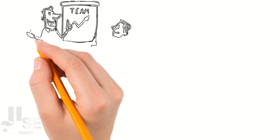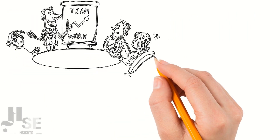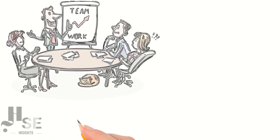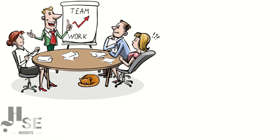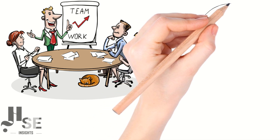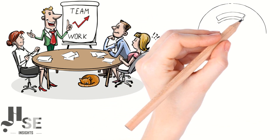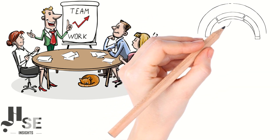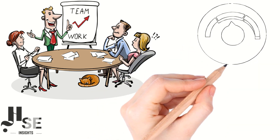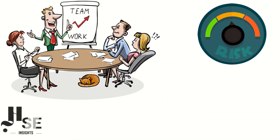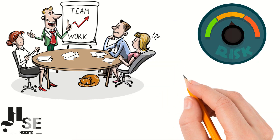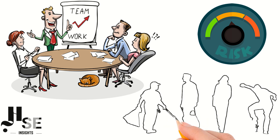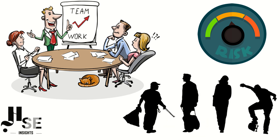Before we begin, it's important to understand that every workplace is unique with its own set of hazards and risks. To ensure a safe working environment, organizations must identify and evaluate potential risks specific to their operations. A crucial step in this process is taking into account the different types of workers within the organization. Let's explore these worker categories.